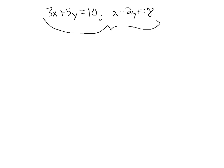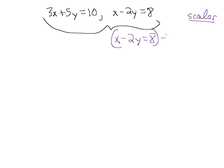Alright, so this is our linear system. When we look at it, we don't have any variables that have either opposite coefficients or identical coefficients, but what we do have is a positive 3x and a positive 1x. So let's take this second equation and multiply it by what's called a scalar — a fancy term for just a number — and we're going to multiply it by minus 3.